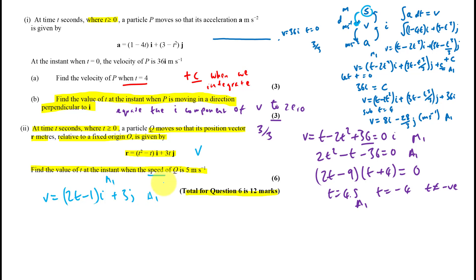Now, keyword is speed. So remember that's when we have to use Pythagoras. We need to spot that. That's easy to miss. So when the speed is 5, imagine the triangle. That's 5. That's 3j. This is 2t minus 1i. So you can see that this squared and that squared has to equal 5 squared. So if you set up that equation you're going to get a method mark and an accuracy mark as well.